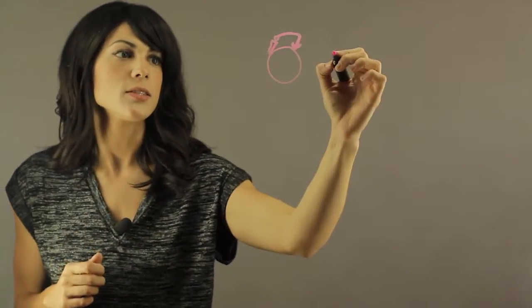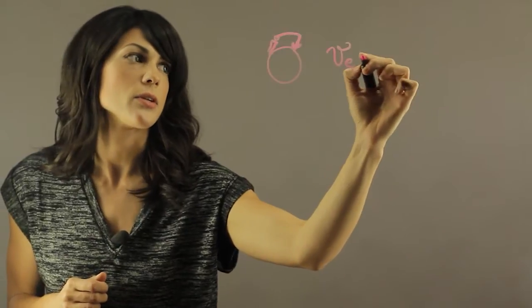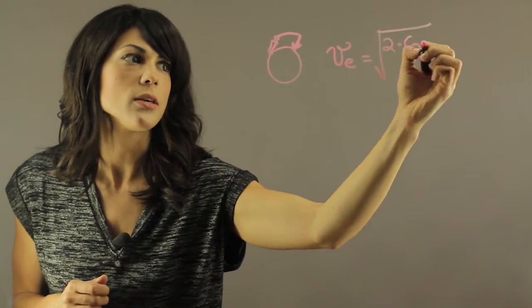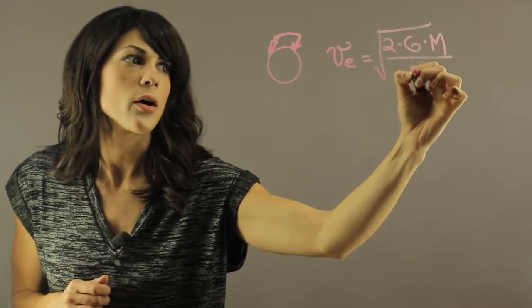So the velocity, the escape velocity equation, is the square root of 2 times G times M divided by r.